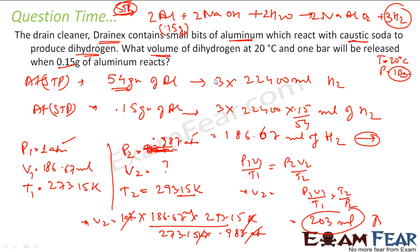So in this case you should now have the idea of stoichiometry also, because the idea of stoichiometry gives us the fact that 0.15 gram of aluminum at STP gives 186.67 milliliter of hydrogen. And with this learning we have got from this chapter, we can find out that this volume of hydrogen at STP will be equal to 203 milliliter of hydrogen at 20 degree Celsius and 1 bar of pressure.